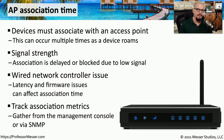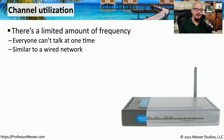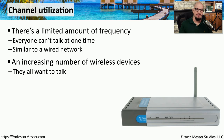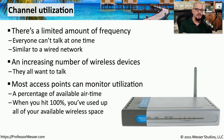You can gather more metrics on association time directly from your wireless controller, or query it using SNMP (Simple Network Management Protocol). In very dense environments, you may find problems with the number of users causing delays — there's only so much frequency available on a wireless access point. We often see this in large gatherings like sports events or trade shows, where everyone is trying to use the network at the same time. You can get metrics directly from the access point showing available airtime as a percentage; once you hit 100%, you're using all available frequency.